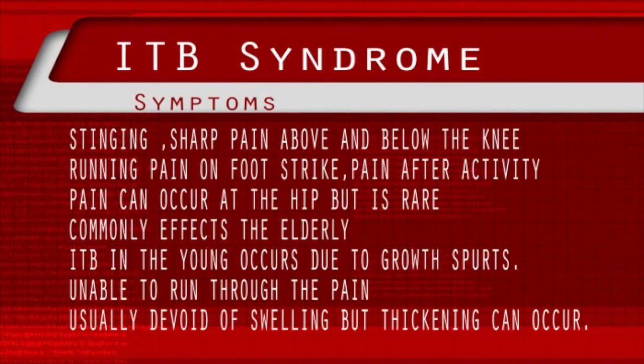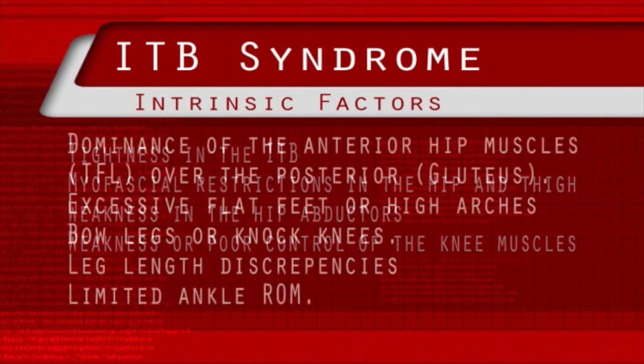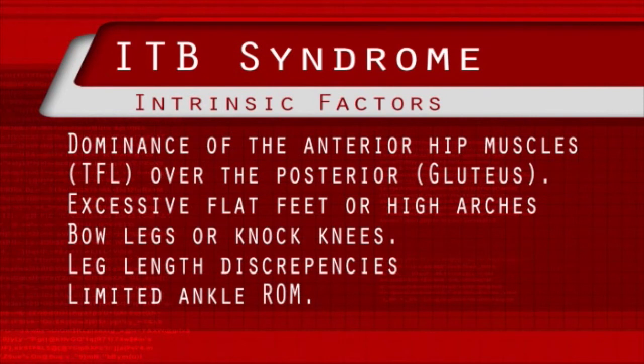Looking at intrinsic factors: there is absolutely no doubt that tightness in the iliotibial band plays a big role. Myofascial restriction in the hip and thigh musculature will increase tension on the iliotibial band. Other intrinsic factors include weakness in the hip abductors, especially in distance runners; weakness or poor control of the knee muscles, especially the quads; dominance of the anterior hip muscles such as the TFL over the posterior muscles such as the glutes; excessive flat feet or high arches; bow legs or knock knees; leg length inequality; and even limited ankle range of movement.